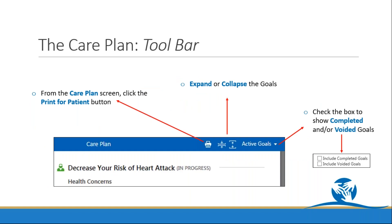Now let's break down some of the module features — I'm calling this the toolbar. When you're in your care plan on the main page, you'll see a toolbar on the right-hand side. Your first option is to print the care plan for your patients. You also have the ability to expand or collapse goals, which is helpful when you have multiple goals or limited screen space. Your view will always default to active goals, but you can change what you see by selecting the drop-down menu to include completed or voided goals.